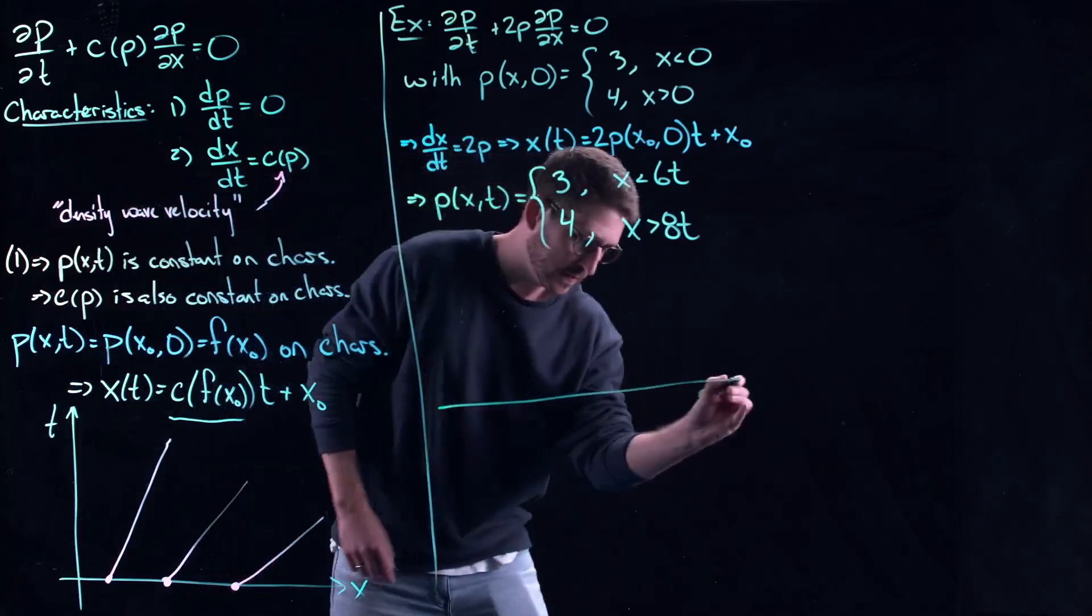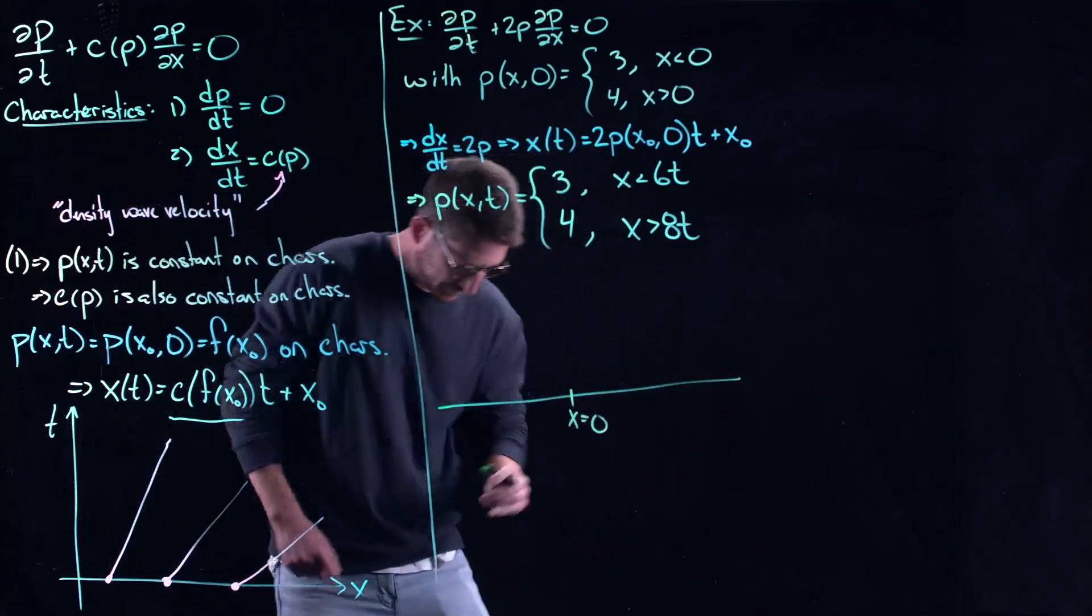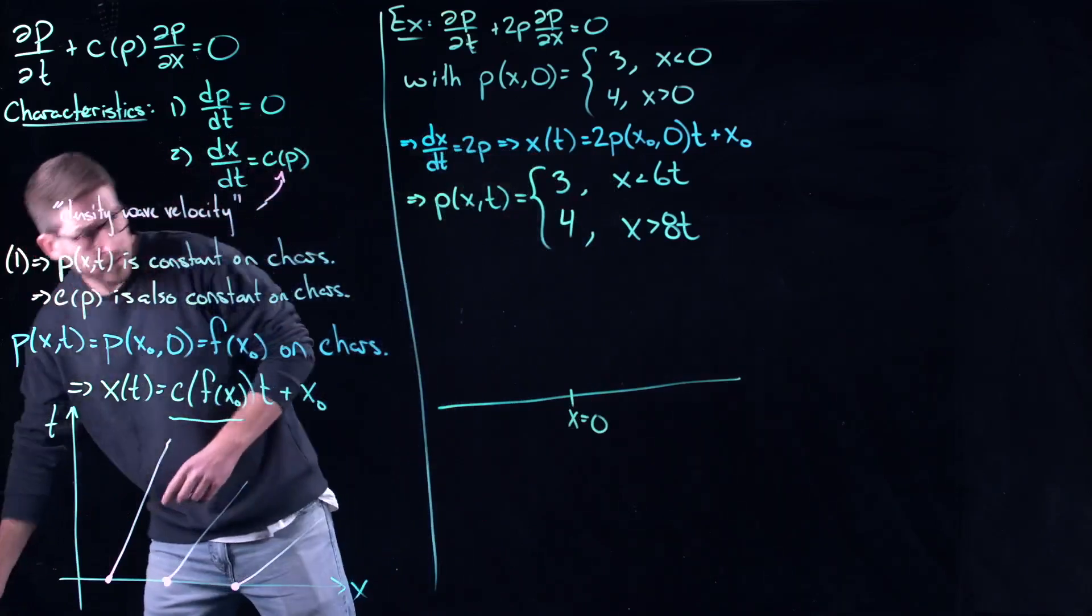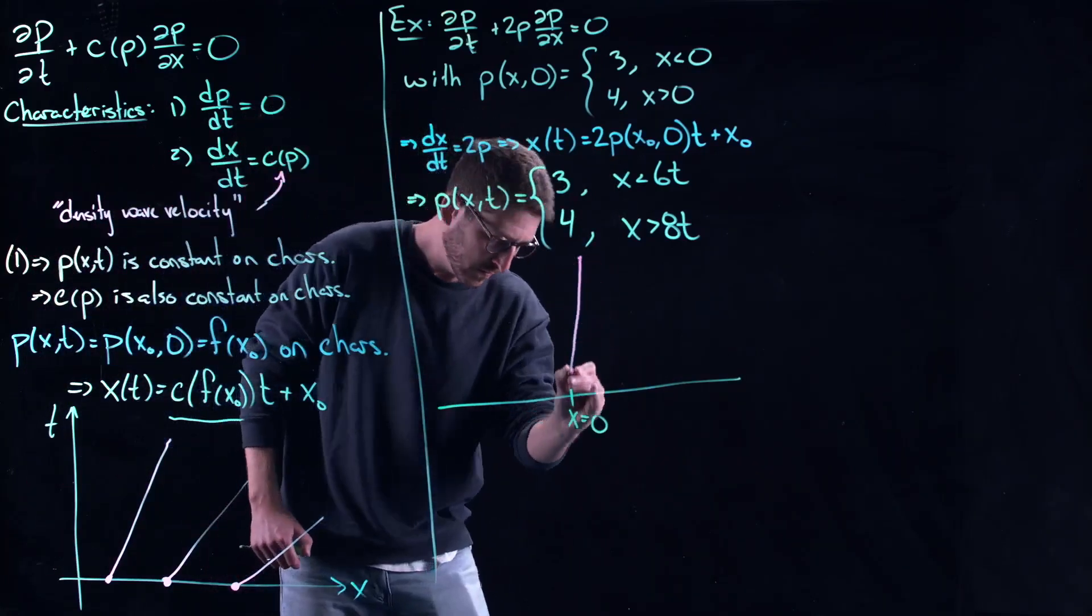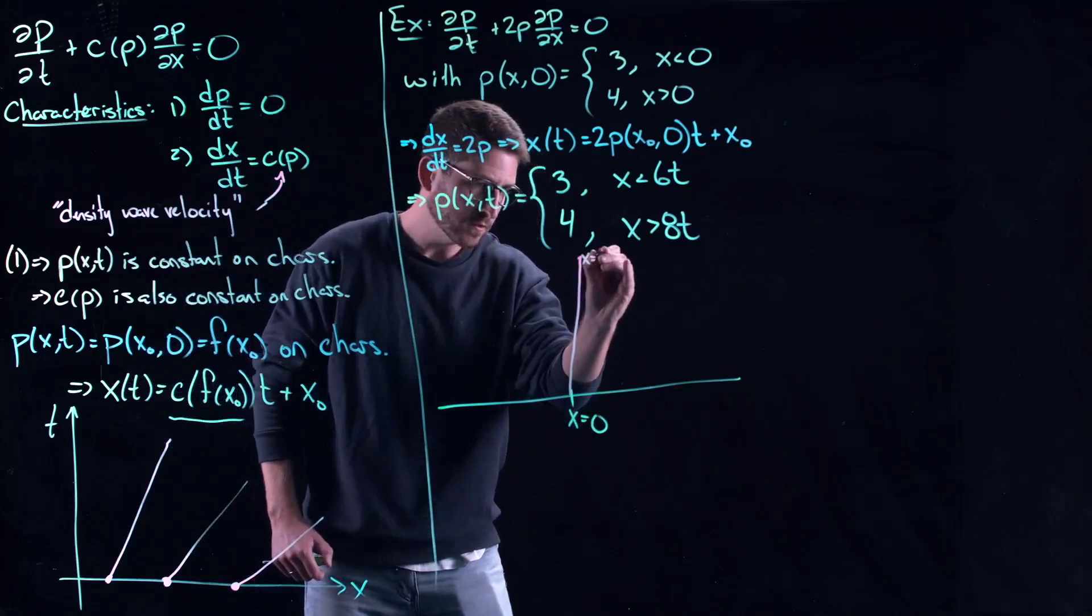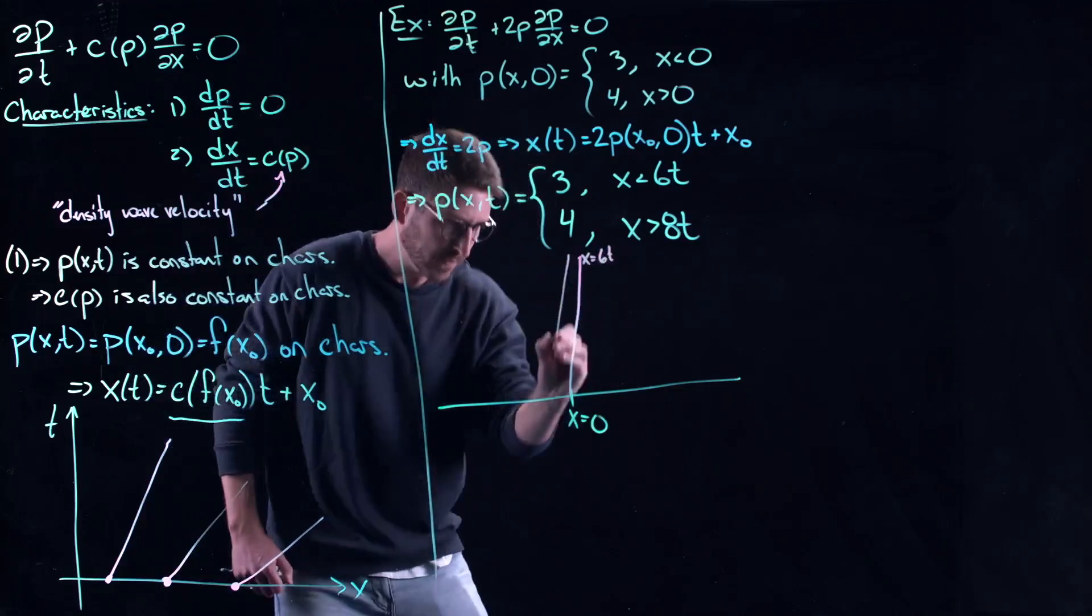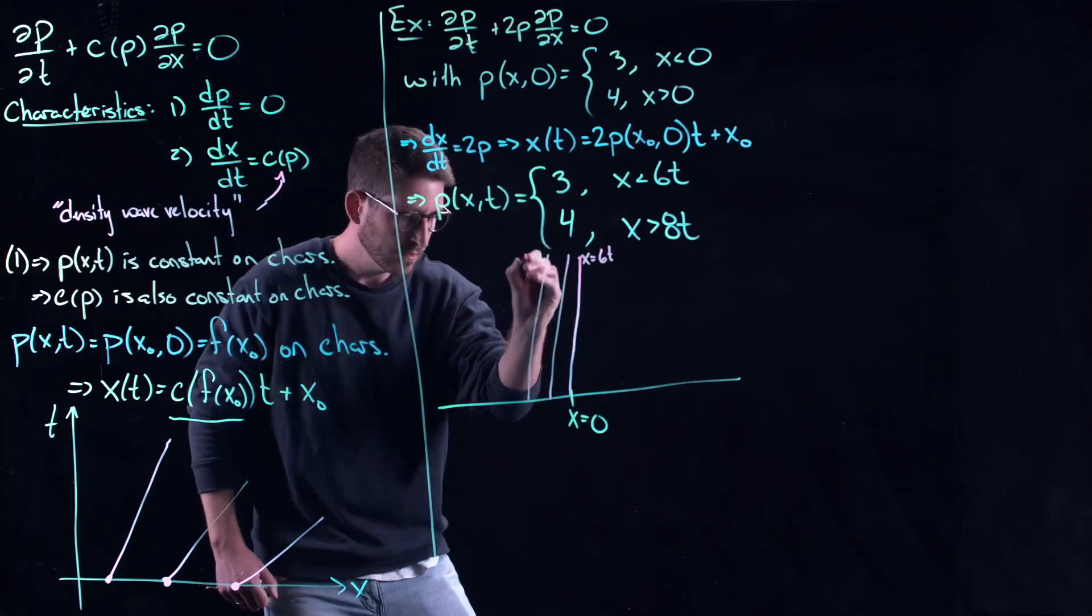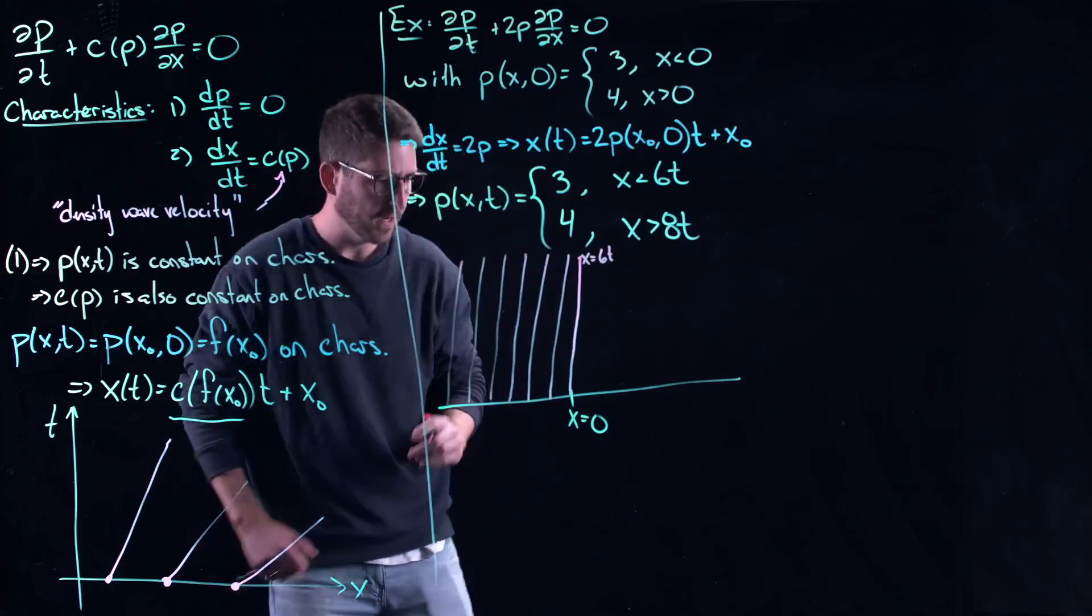If we sketch out these characteristics, maybe we'll put x equal to 0 here, then we've got one line that is x equal to 6t, and behind everybody's parallel because the initial condition was constant back there.